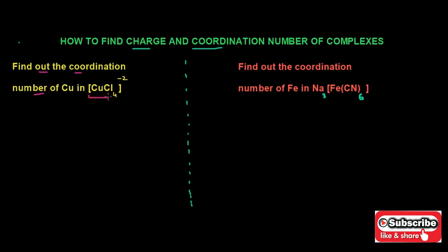As you can see, this complex has an overall negative two charge on the coordination sphere, so it means this is a complex anion. In this complex anion, copper is the central metal ion while the chloride ion is acting as a ligand. As you can see, one copper atom is bonded to four chloride ions, so the coordination number for copper would be four.